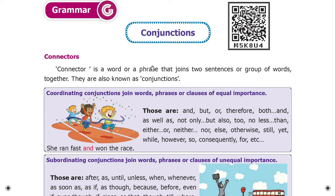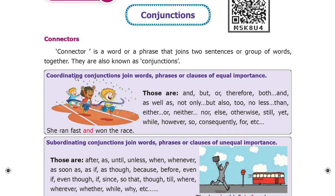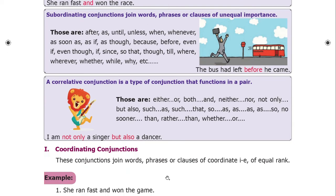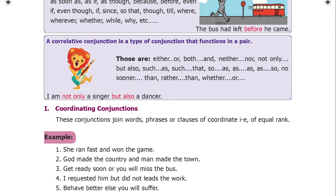Conjunctions: a connector is a word or phrase that joins two sentences or groups of words together. They are also known as conjunctions. There are three types of conjunctions: coordinating conjunctions, subordinating conjunctions, and correlative conjunctions. Coordinating conjunctions join words, phrases, or clauses of equal importance.